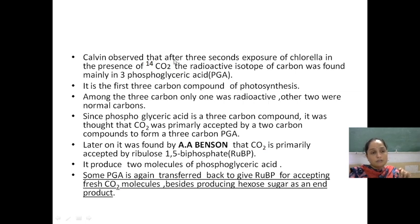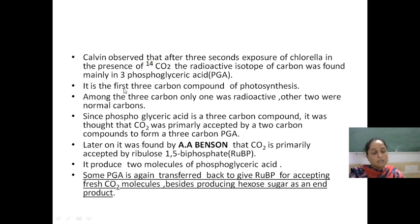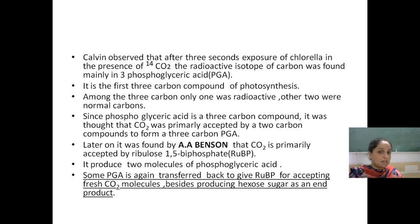Calvin observed that after just three seconds of exposure to 14CO2, the radioactive carbon was found mainly in three-phosphoglyceric acid (PGA). The product formed was a 3-carbon compound — phosphoglyceric acid — which is the first 3-carbon compound of photosynthesis. Plants in which this 3-carbon compound is the first product are called C3 plants. So there are two types of plants: C3 and C4, and this happens in C3 plants.